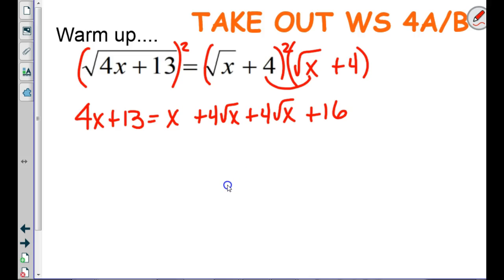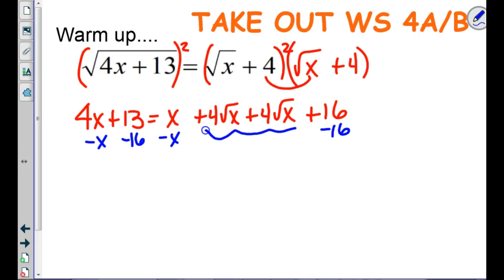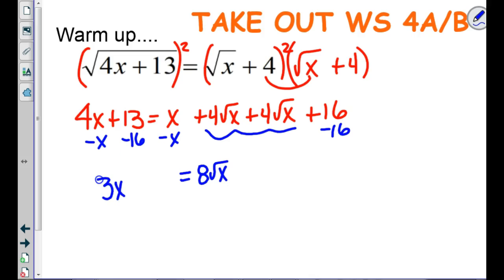Remember the plan — because there's a radical we need to isolate it again. If I combine terms on the right I'll have 8 square roots of x, and over here because I moved the x and the 16, I'll have 3x minus 3.